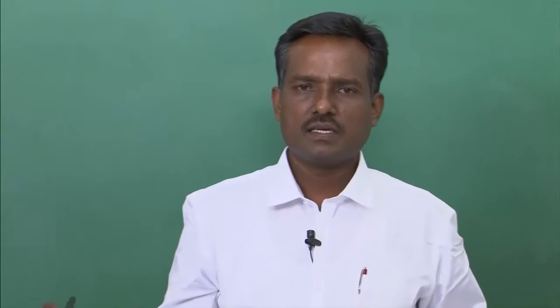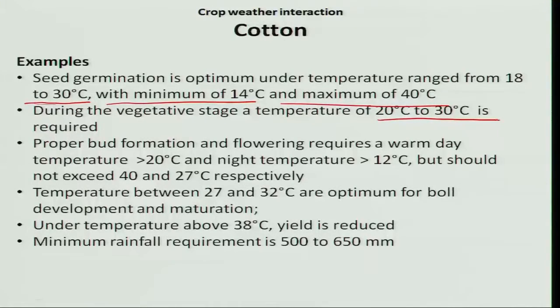Let us see the crop weather interaction during the germination phase. The optimum temperature for seedling emergence is 18 to 30 degree Celsius, with a minimum of 14 degree Celsius and a maximum of up to 40 degree Celsius. During seedling emergence or seed germination, it requires optimum moisture, optimum temperature, as well as oxygen.